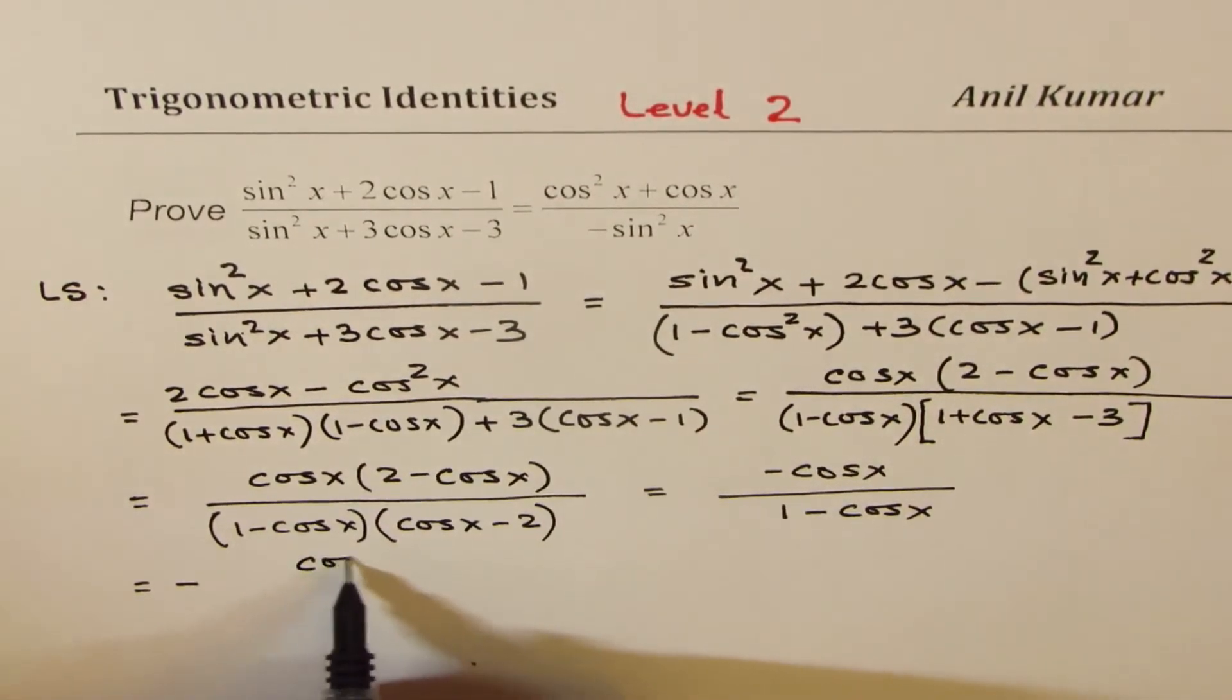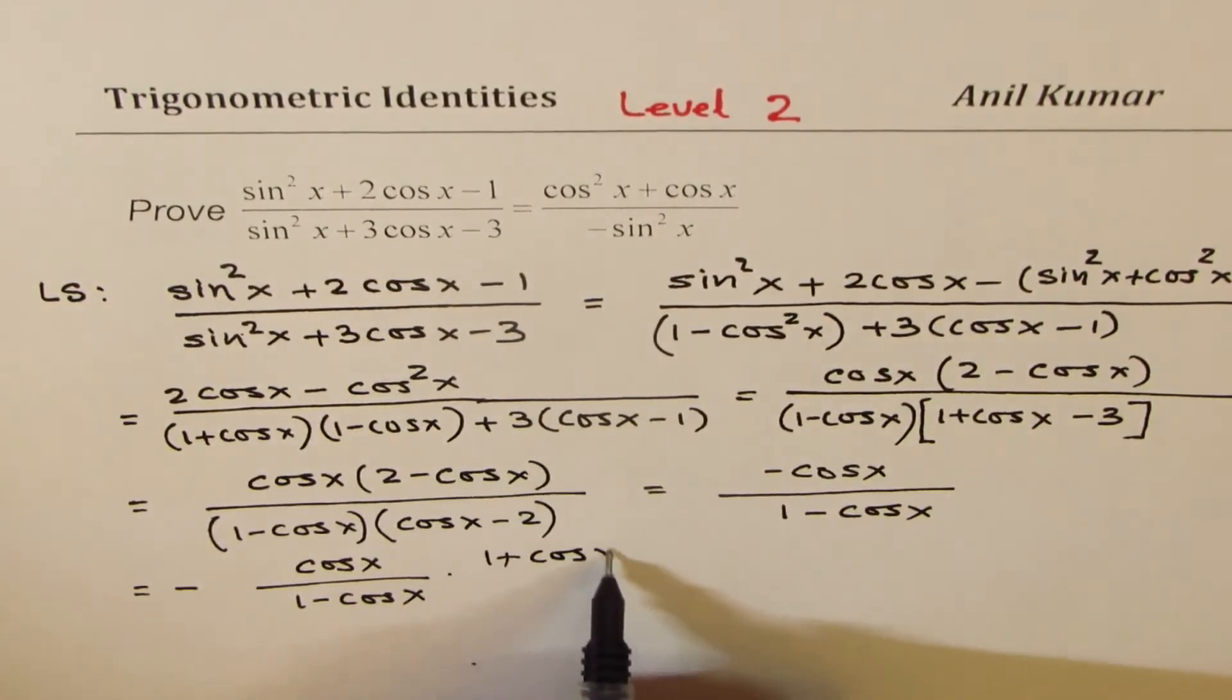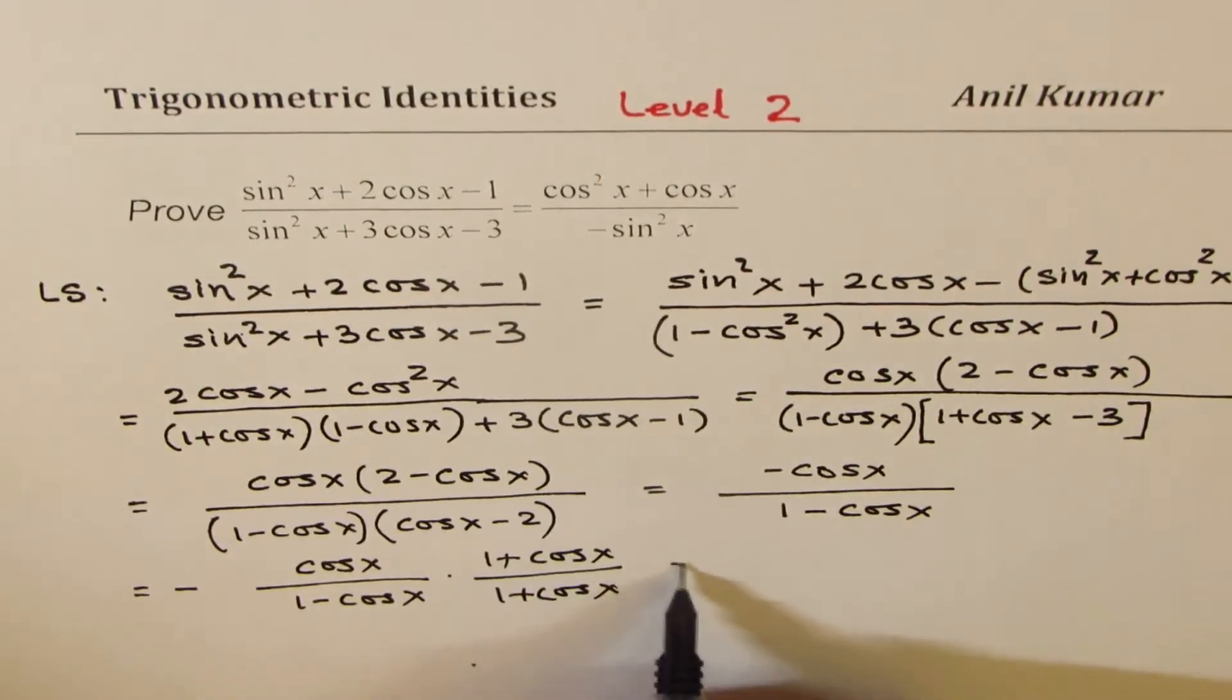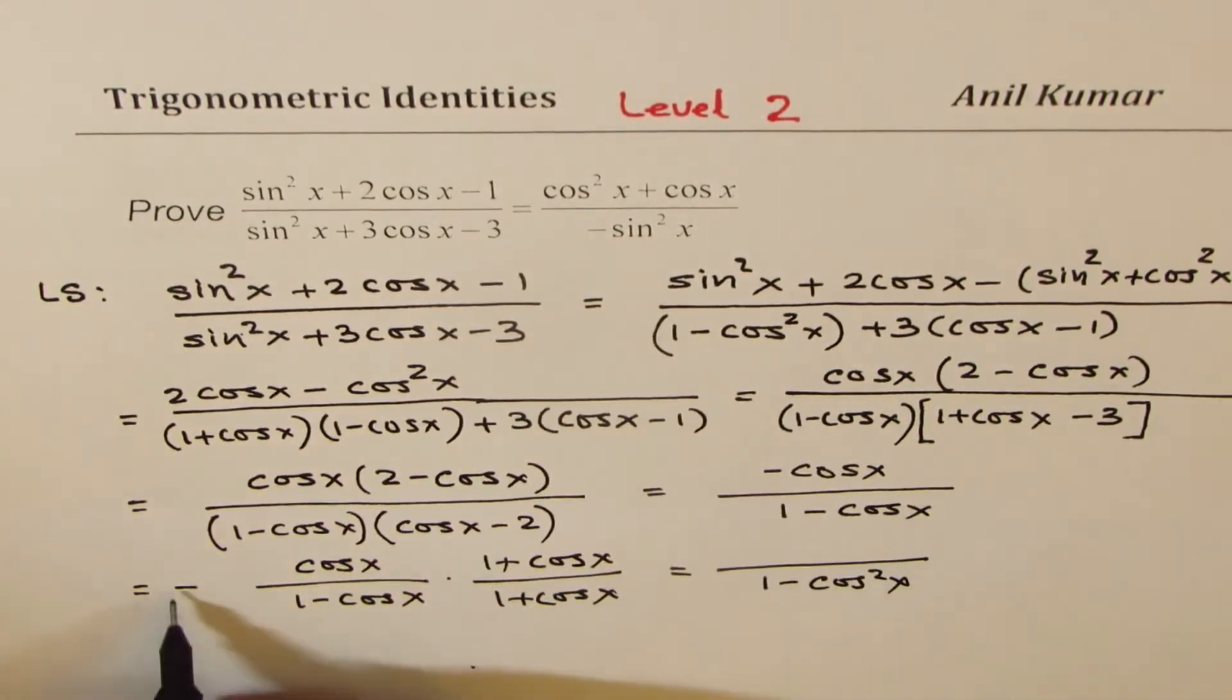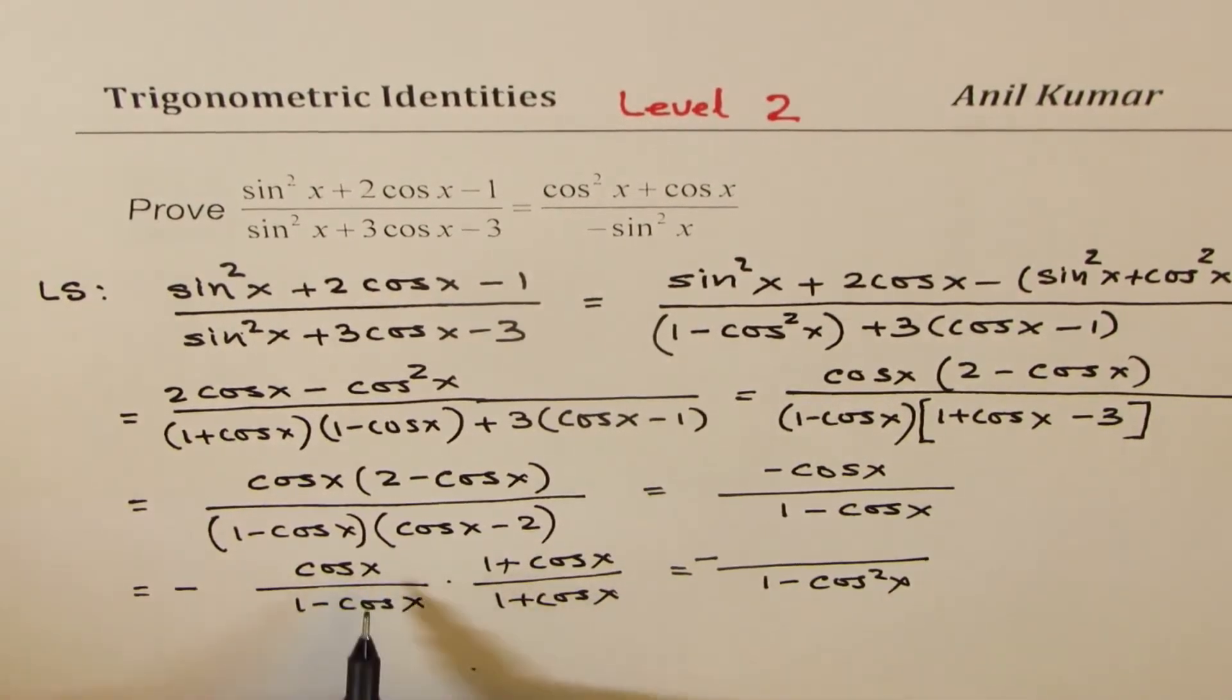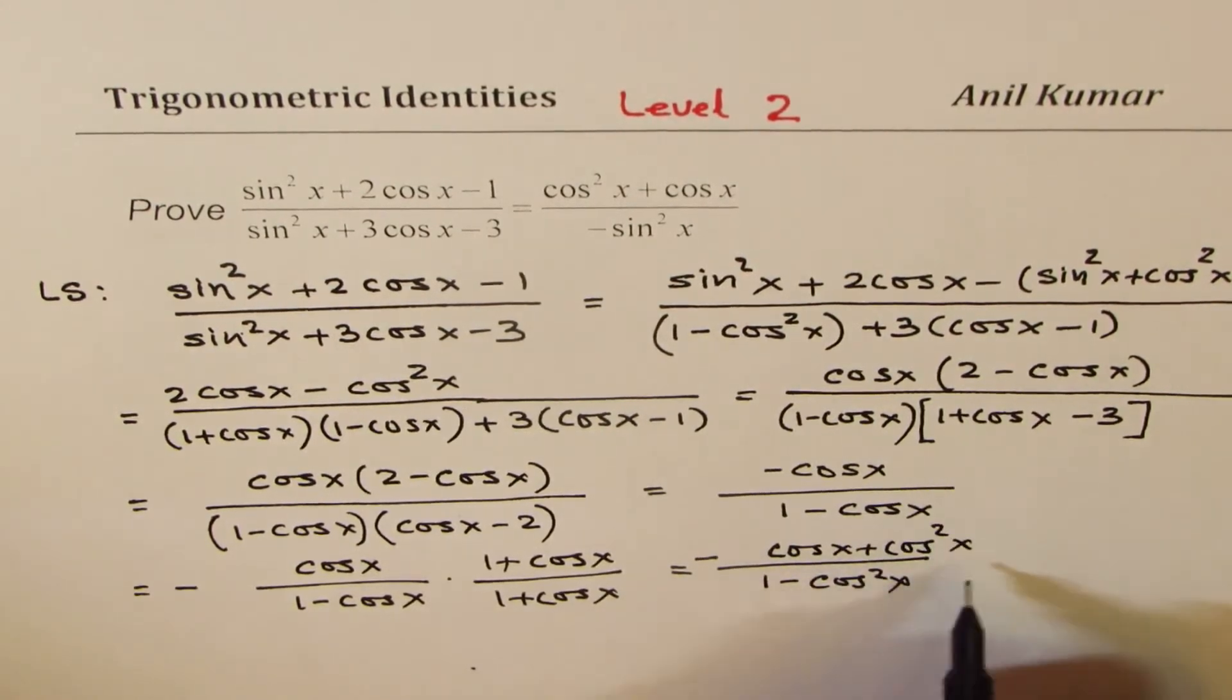And what we have here is cos x over (1 - cos x). We can multiply and divide by its conjugate, which is 1 + cos x. So in the denominator, we get difference of squares, which is 1 - cos²x. Here we have negative sign. Let me keep this negative sign. And the numerator, I can multiply these. So I get cos x + cos²x.